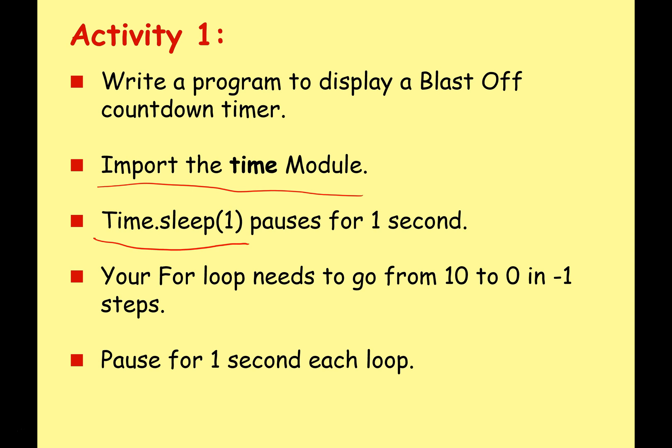So then instead of just displaying it all at once, we get 10, 9, 8, and so on and so forth. So our for loop needs to go from 10 to 0 in steps of minus one, with that one second pause between each loop.